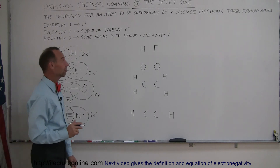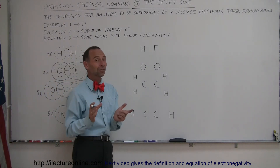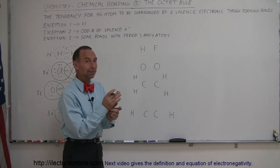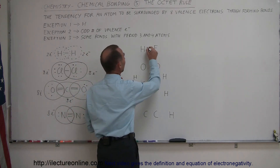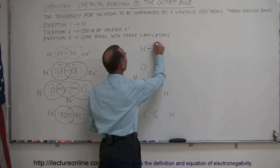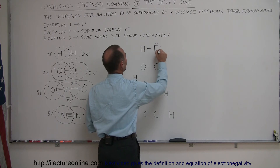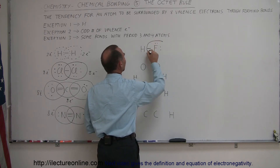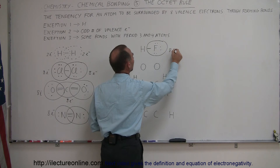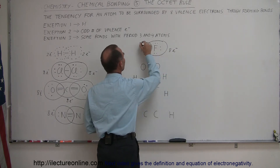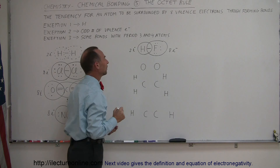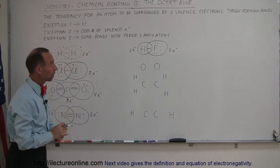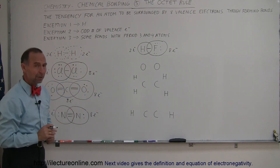Coming over here with hydrogen fluoride: whenever you have hydrogen, the octet rule cannot be upheld by hydrogen — it can only have two valence electrons. In this case it'll be a single bond. Fluorine came in with seven electrons, so it'll have six additional electrons. Notice that fluorine follows the octet rule and has eight electrons, while hydrogen will have two electrons part of the time, forming a bond this way.